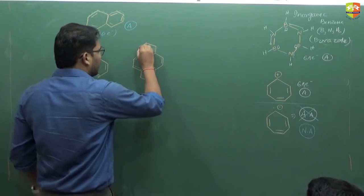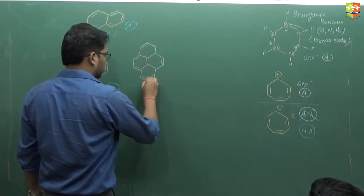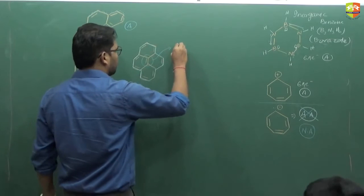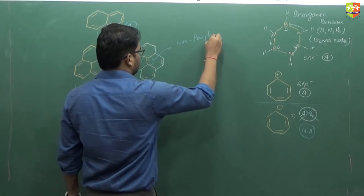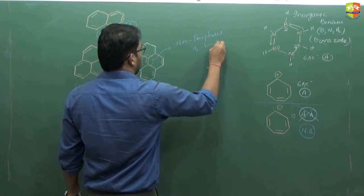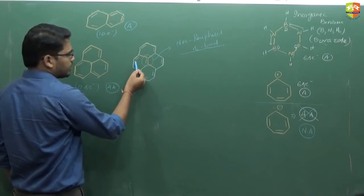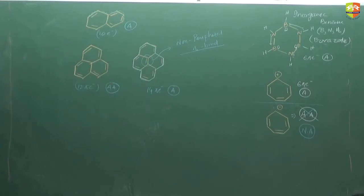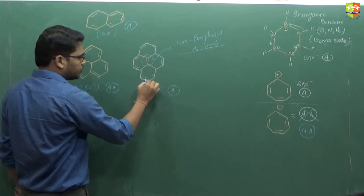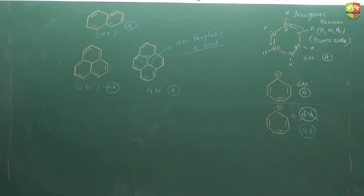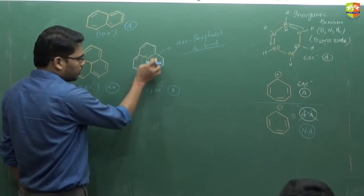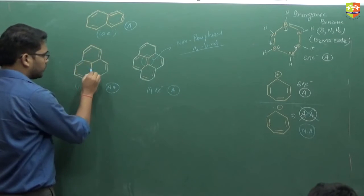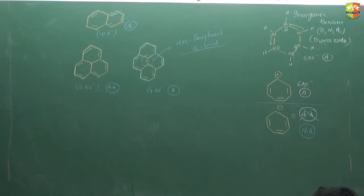In this one, we only count peripheral pi electrons. This bond is non-peripheral. So we count: 1, 2, 3, 4, 5, 6, 7 — 14 pi electrons, and it is aromatic. Non-peripheral means the common bond between the rings — that bond we won't consider. Non-peripheral pi bonds we won't count.